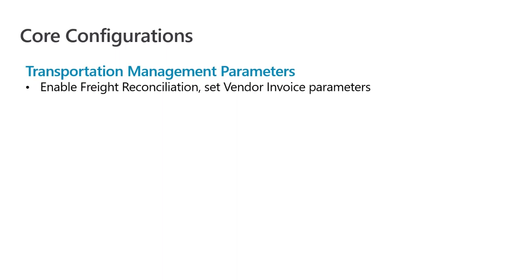The second set of parameters is a little bit more involved. You'll find those under the vendor invoice tab on the parameter form, and those settings allow you to determine how automated or how manual you want the vendor invoice posting process to be at the end of the reconciliation process. I'll discuss those in more detail when we get into the system.